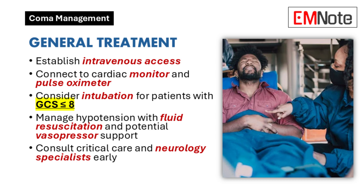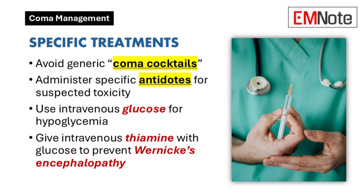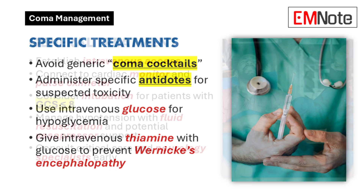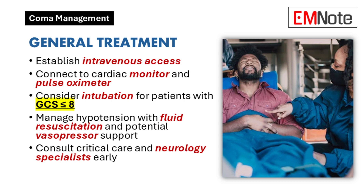So let's talk about treatment. If the workup shows hypoglycemia, give them glucose — simple as that. If it's a narcotic overdose, we give naloxone to reverse the effects. Each cause has its own specific treatment. For something like a stroke or a brain bleed, it's more complex — those often require a multidisciplinary approach involving neurology, neurosurgery, and critical care, with treatment depending on the location and severity.